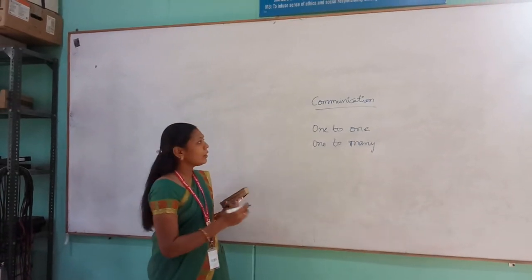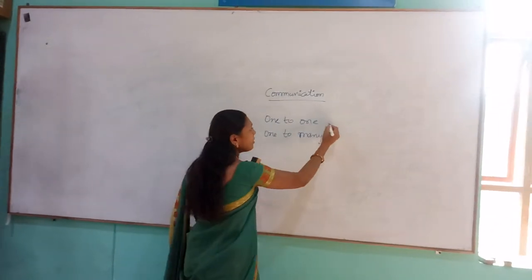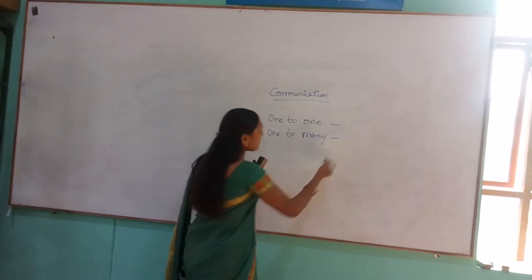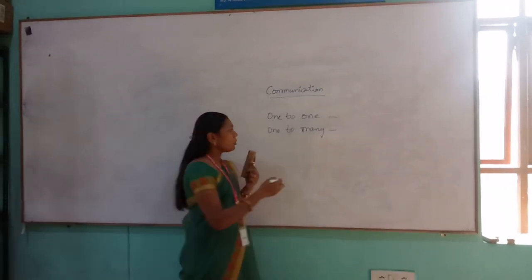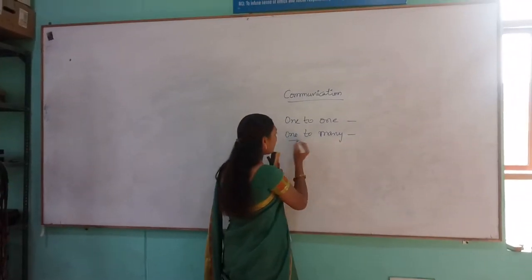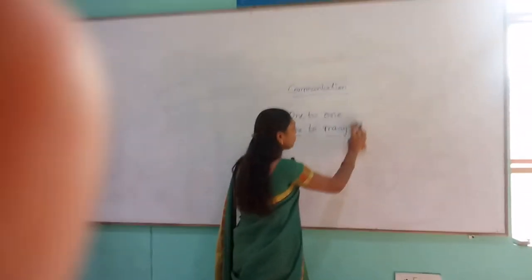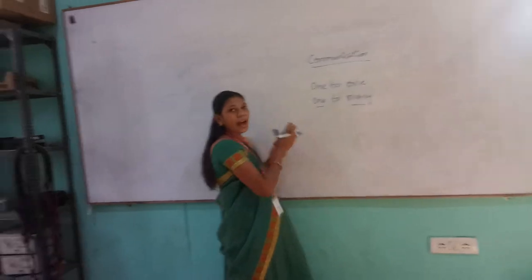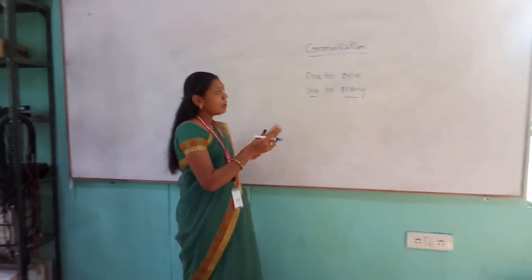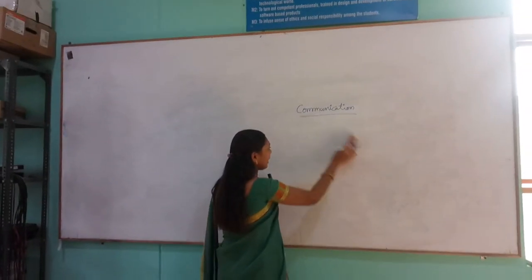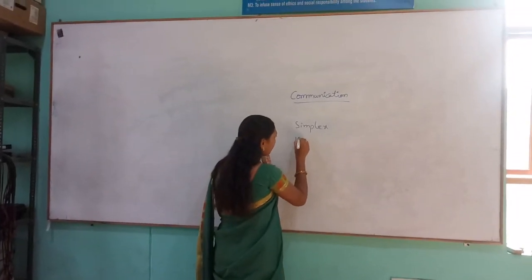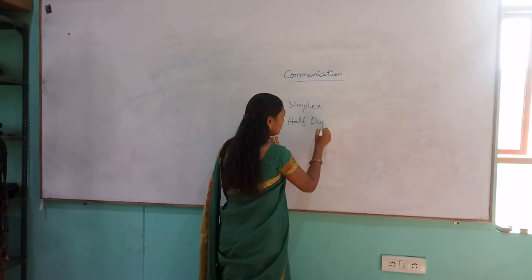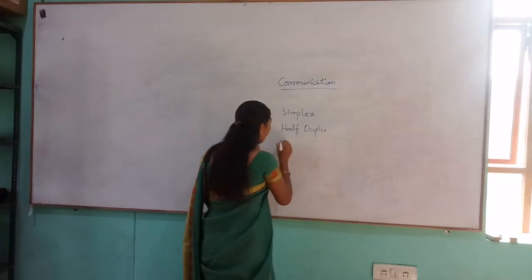So one to one is nothing but a talk between two single persons, and one to many is nothing but one person is giving a lecture or addressing the people. So the count is like one to many, then that communication is called as one to many communication. So in this we will be having modes of communication, and we are having different types like simplex, half duplex, and full duplex.